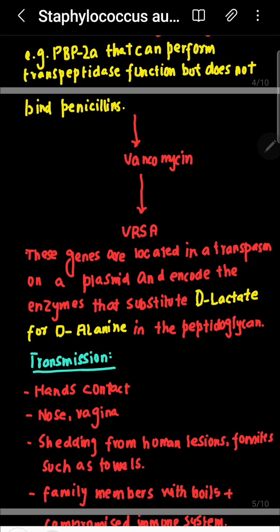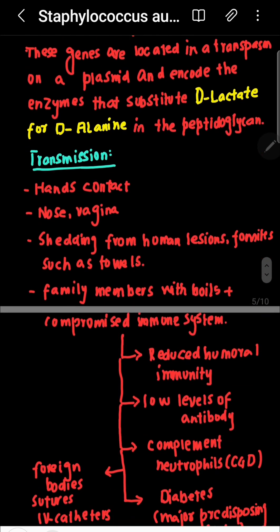Regarding transmission and habitat: the main habitat is the human nose, and it is also found on human skin. Transmission is via hands. It is not usually limited to the skin — it can occur in any organ.